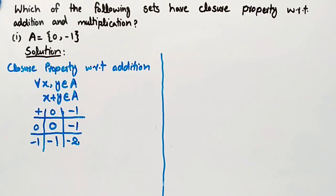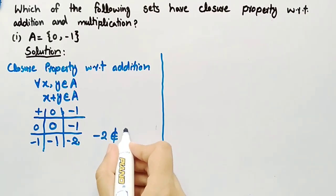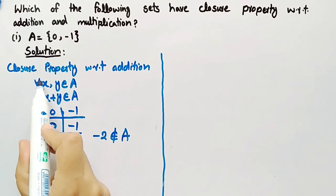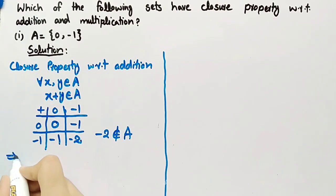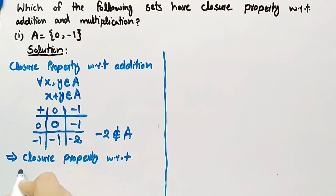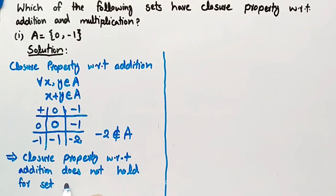Here we can clearly see that 0 and -1 belong to set A, but -2 does not belong to set A. This means that set A does not satisfy the definition of closure property with respect to addition, which implies that closure property with respect to addition does not hold for set A = {0, -1}.